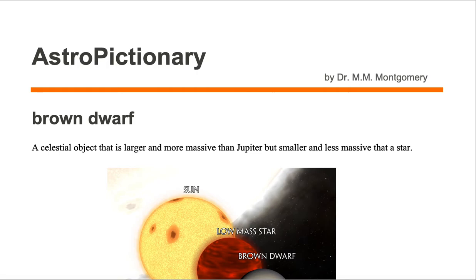A brown dwarf is a celestial object that is larger and more massive than Jupiter, but smaller and less massive than a star.